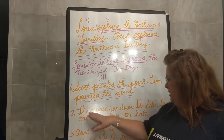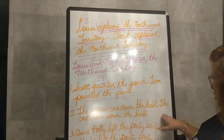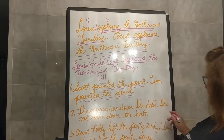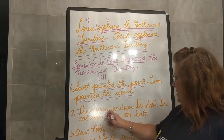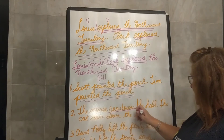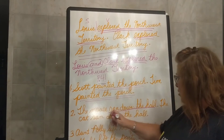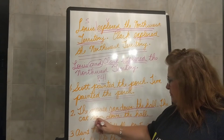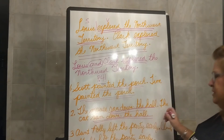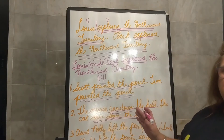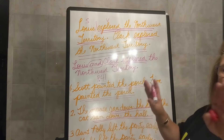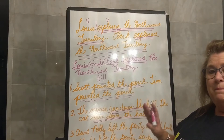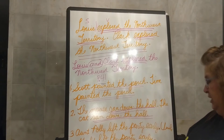Number two: the mouse ran down the hall. The cat ran down the hall. So in both of these we have the same predicate — ran down the hall, ran down the hall. Combine those two choppy sentences into one smooth sentence with a compound subject.